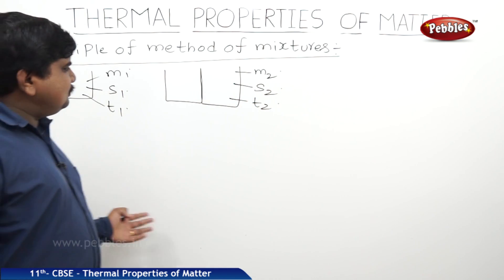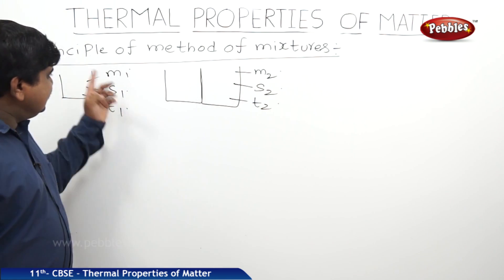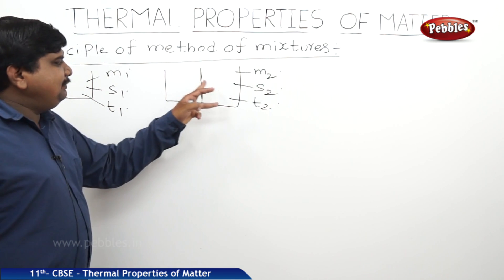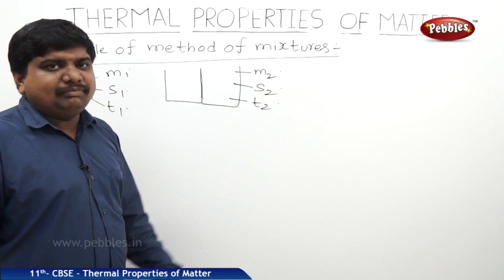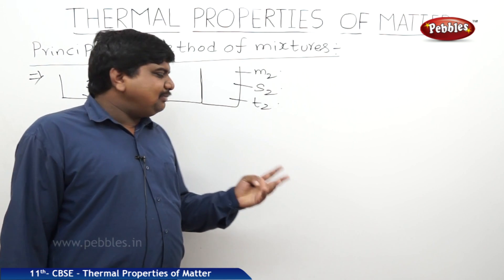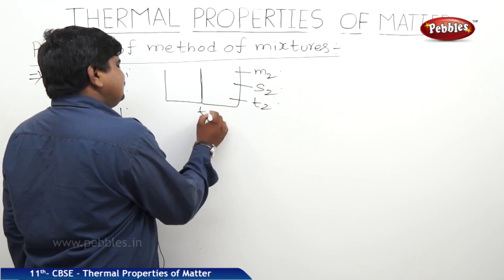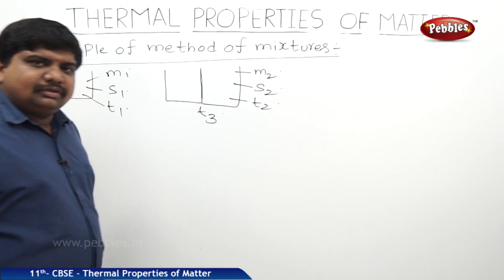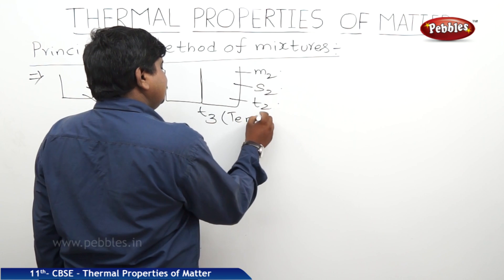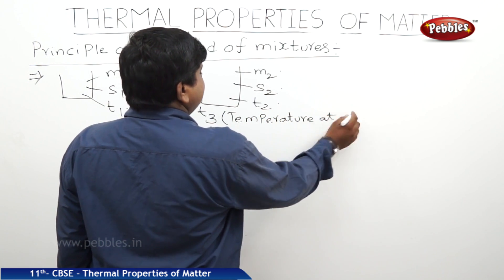When these two bodies — which are at two different temperatures, two specific heat capacities, two different masses — are made thermally in contact, there will be a junction temperature between the two objects. The junction temperature is nothing but the common temperature between these two bodies. Let us say the common temperature is T3, which is the thermal equilibrium temperature.